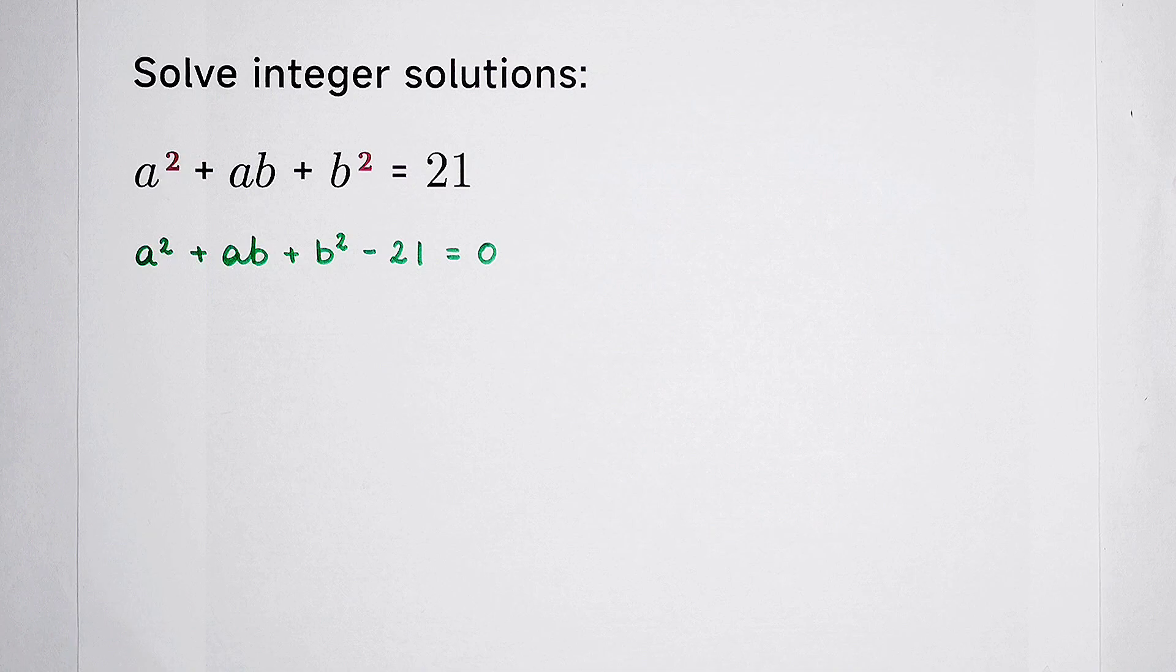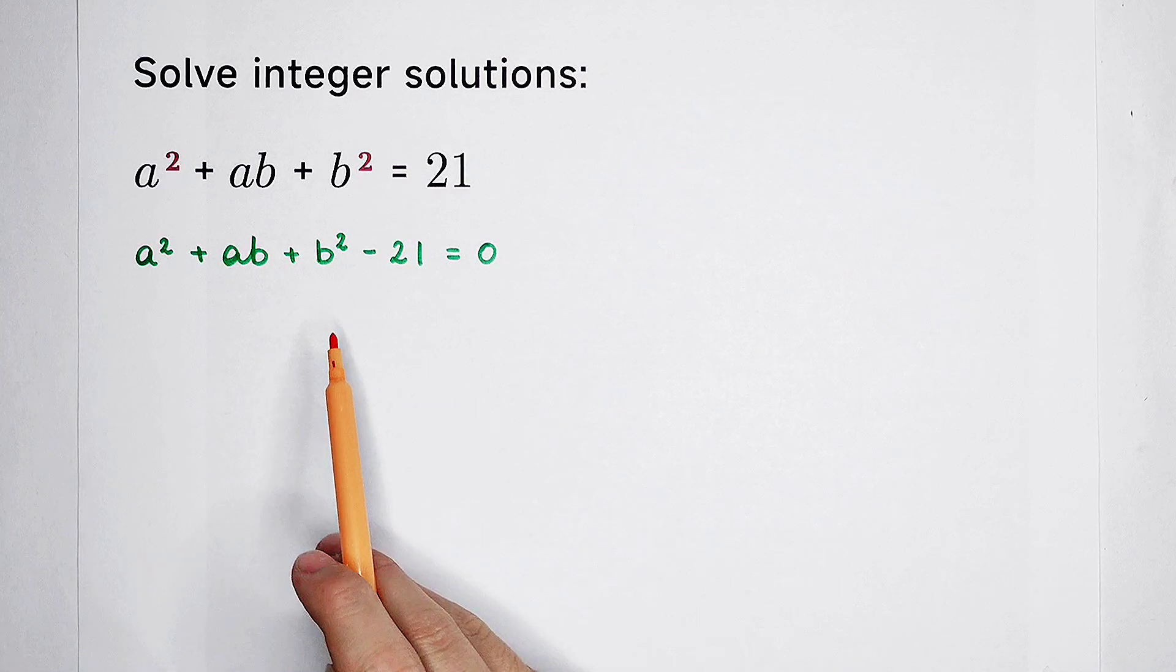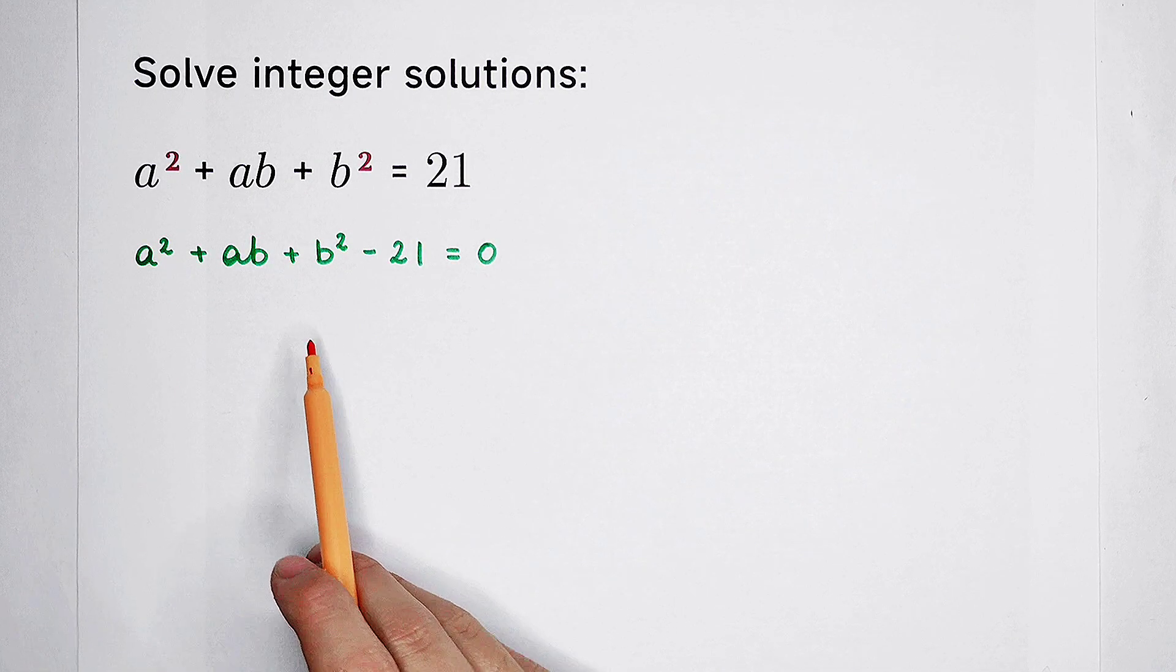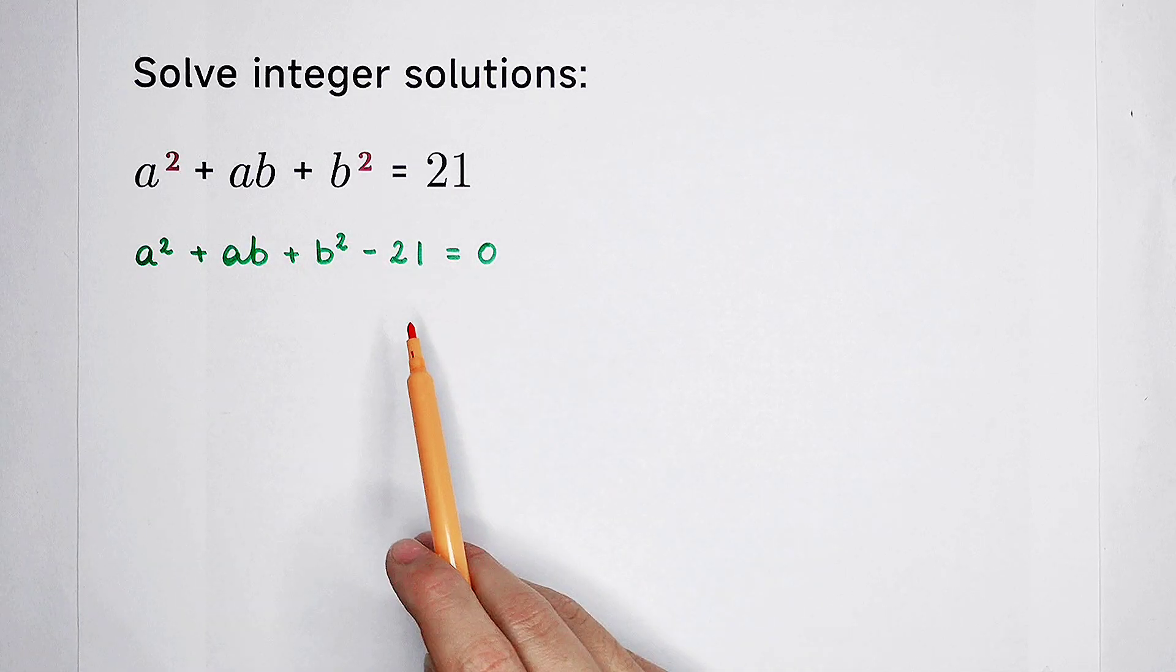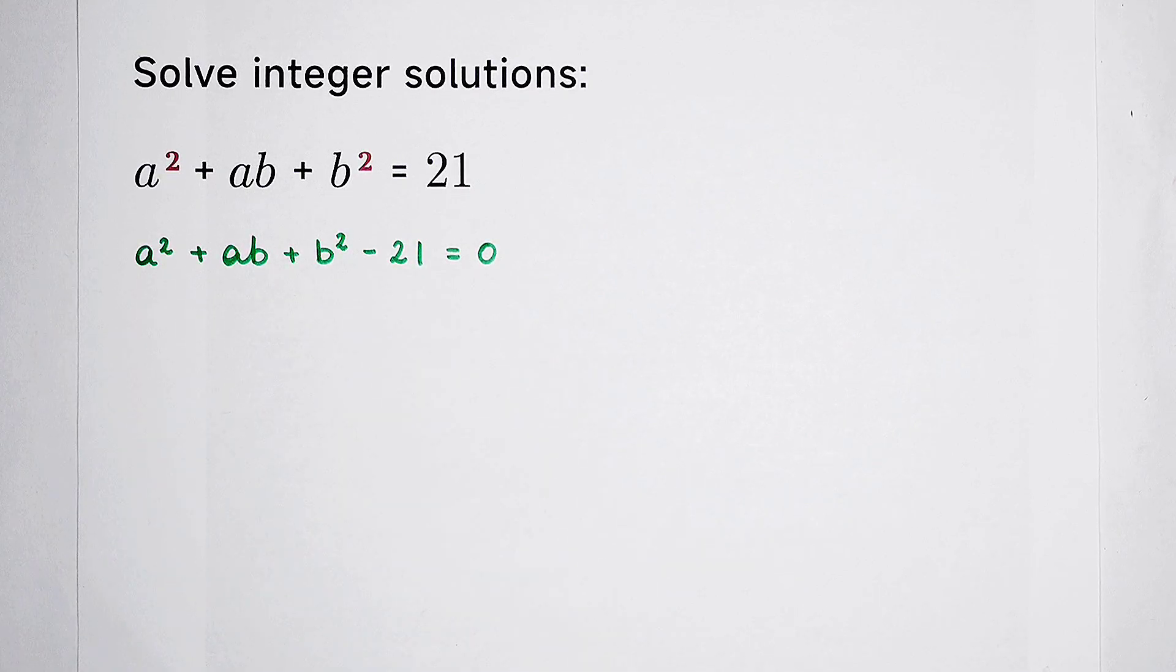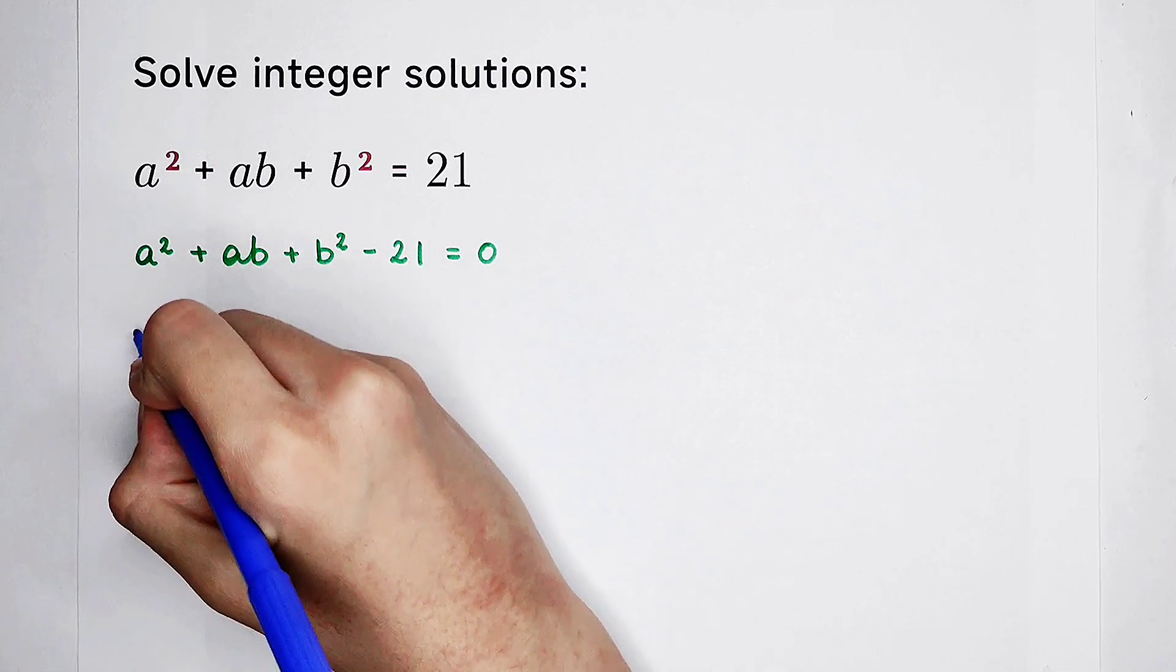Usually, we should regard one variable as a term of the other. That means we can regard this equation as a quadratic equation about a. So now, let's do some changes again on this equation.